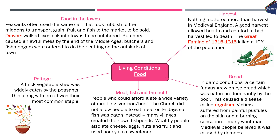Drovers were people on foot who walked livestock such as cows and sheep into towns to be butchered. By the end of the Middle Ages, butchery was causing an awful mess, and butchers and fishmongers near 1500 were actually ordered to do their cutting on the outskirts of town to reduce the mess being made within towns.